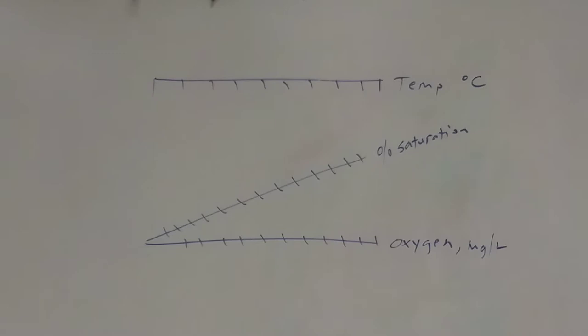It looks something like this: you have temperature at the very top, you have percent saturation on a diagonal line right underneath the temperature scale, and then you have your oxygen in milligrams per liter on the bottom scale. This is going to allow us to take two different variables and match up with a third.